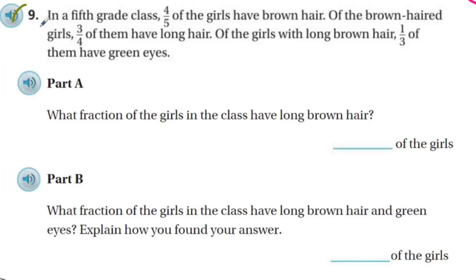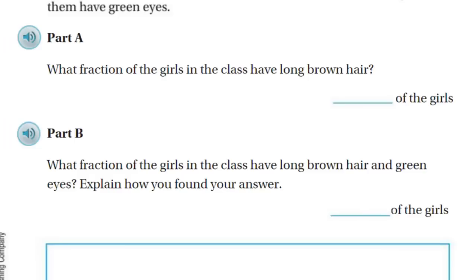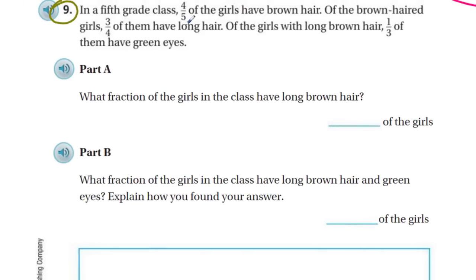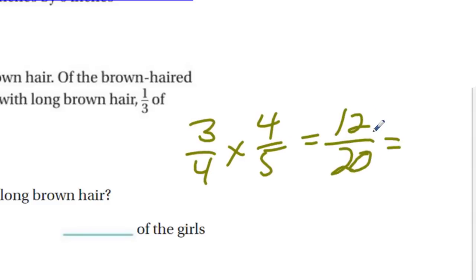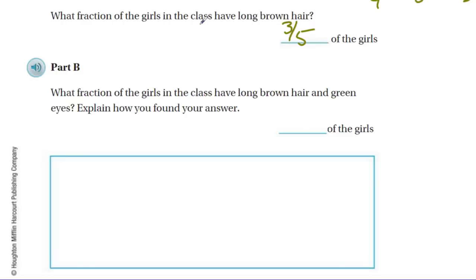Question nine: In a fifth grade class, four-fifths of the girls have brown hair. Of the brown-haired girls, three-quarters of them have long hair. Of the girls with long brown hair, one-third of them have green eyes. What fraction of the girls in the class have long brown hair? We multiply three-fourths of four-fifths: three-fourths times four-fifths equals 12 twentieths. Dividing out a four gives us three-fifths. So three-fifths of the girls have long brown hair.